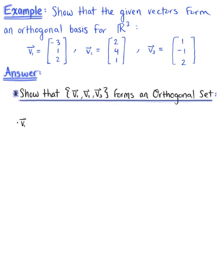Case one: we are checking the dot product of vector V₁ with vector V₂. Vector V₁ is [-3, 1, 2], and we are dotting this with the vector with components [2, 4, 1]. Computing the dot product, we have -6 + 4 + 2, which gives us 0.